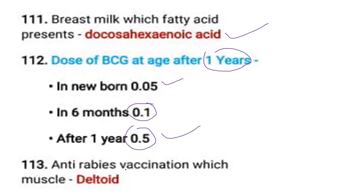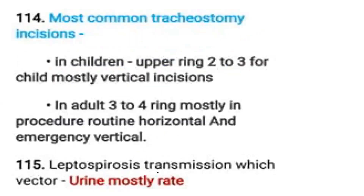Anti-rabies vaccine is given in which muscle? Deltoid muscle. Most common tracheostomy incision: in children, the upper second and third tracheal rings are used, with mostly a vertical incision.